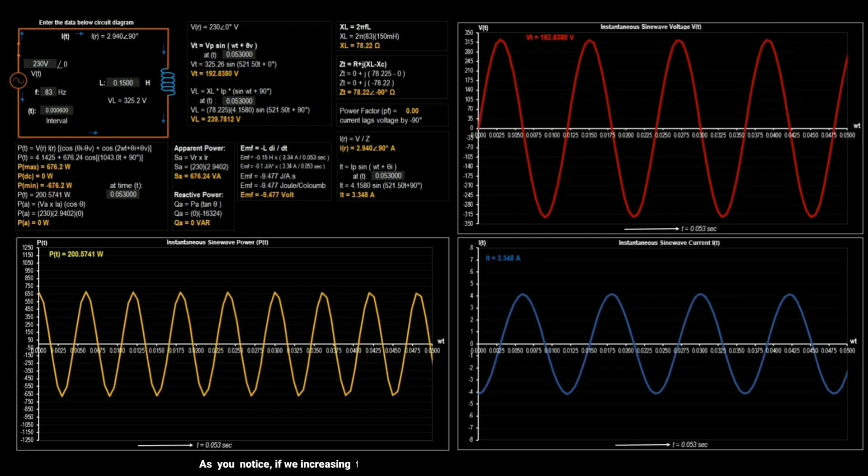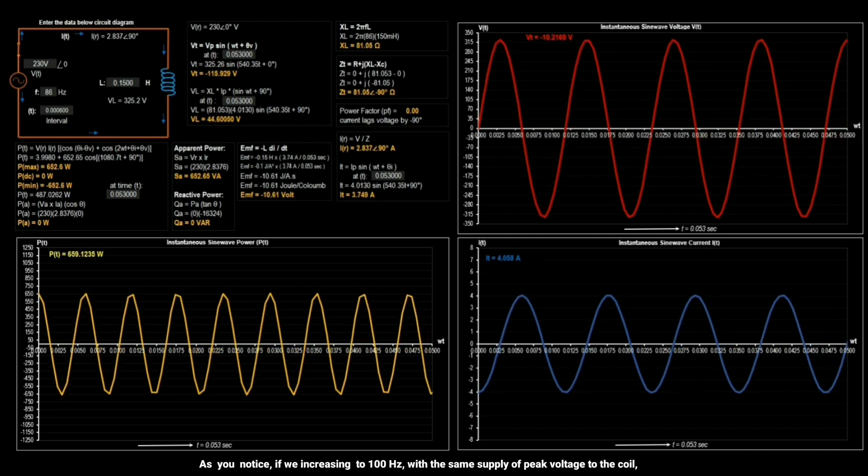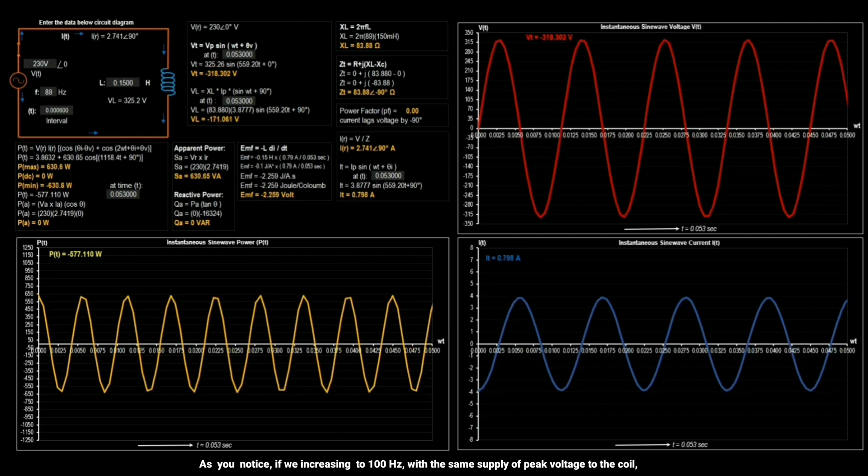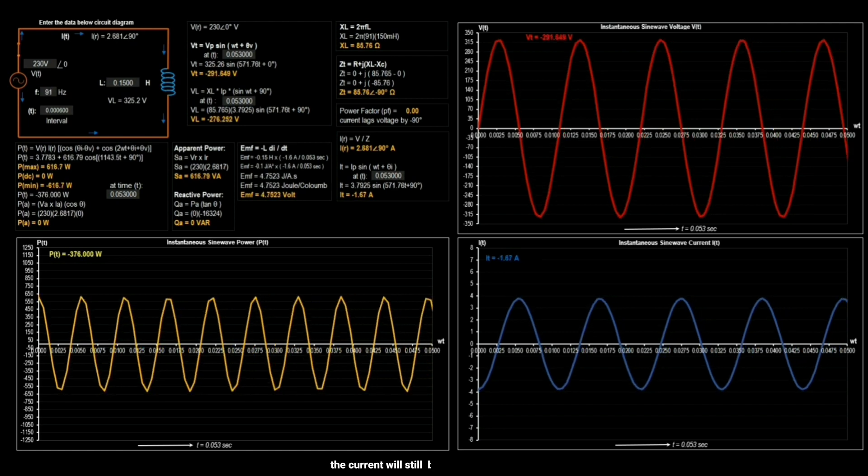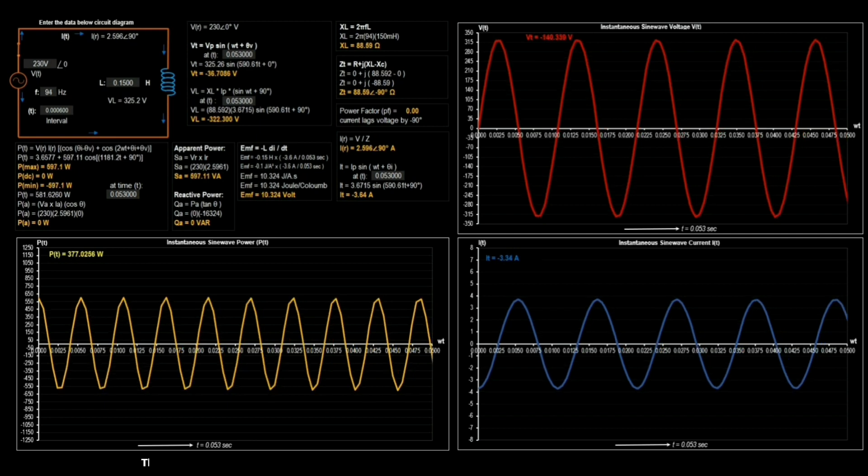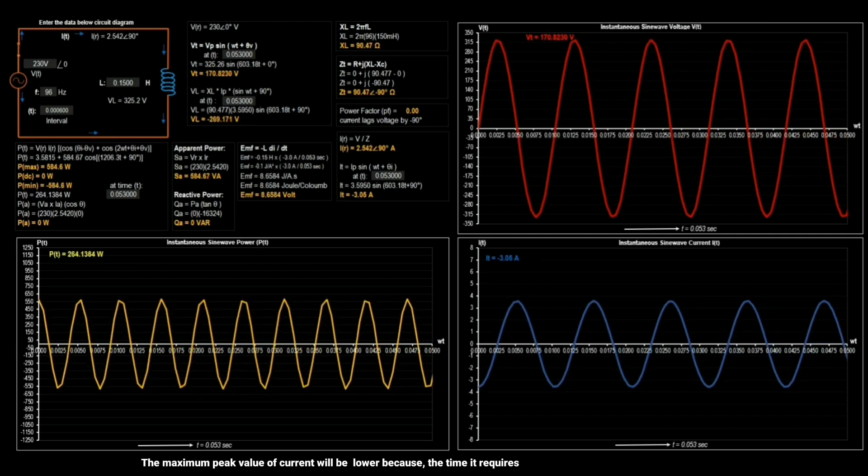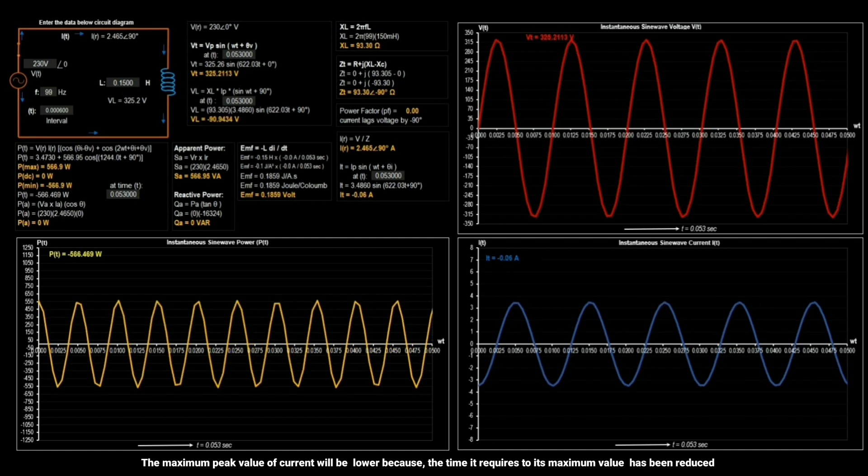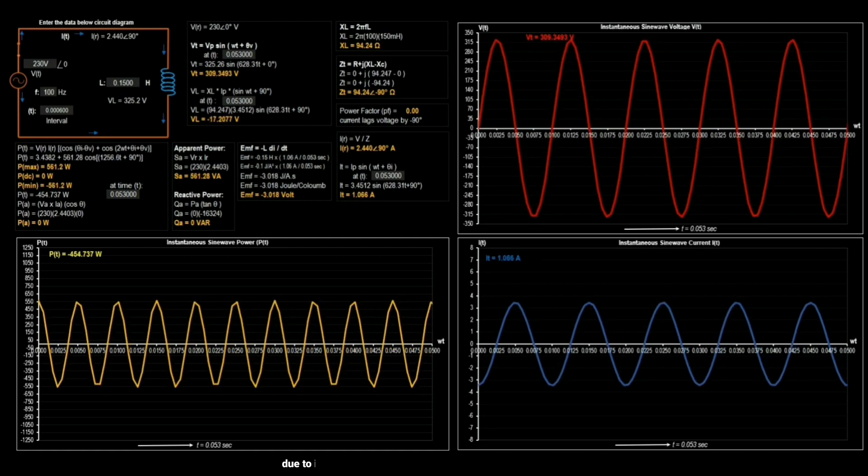As you notice, if we increasing to 100 Hz with the same supply of peak voltage to the coil, the current will still be delayed by 90 degree. The maximum peak value of current will be lower because the time it requires to its maximum value has been reduced due to increase in frequency 1-2 T seconds to reach its peak value.